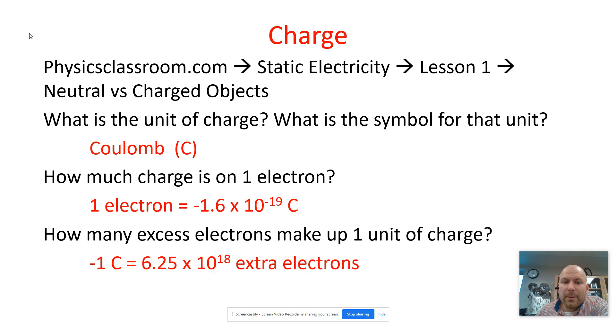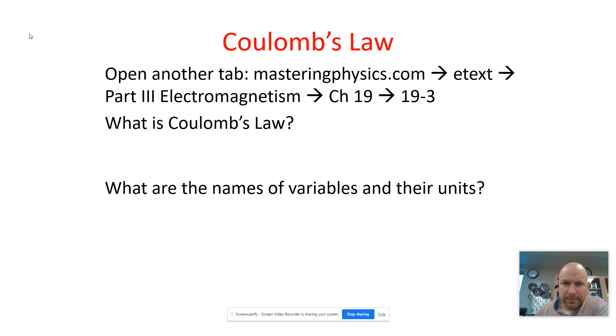A whole lot. Negative 1 coulomb of charge is 6.25 times 10 to the 18th extra electrons. So it's a pretty big amount of extra electrons.